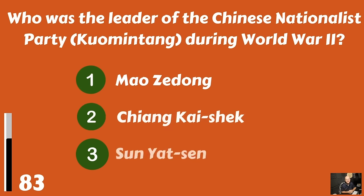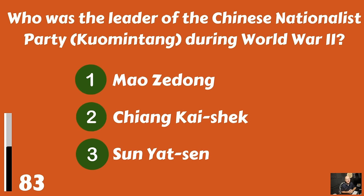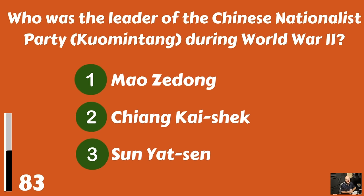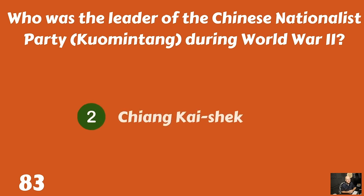Who was the leader of the Chinese Nationalist Party, the Kuomintang, during World War II? Mao Zedong, Chiang Kai-shek, or Sun Yat-sen? And that was Chiang Kai-shek.